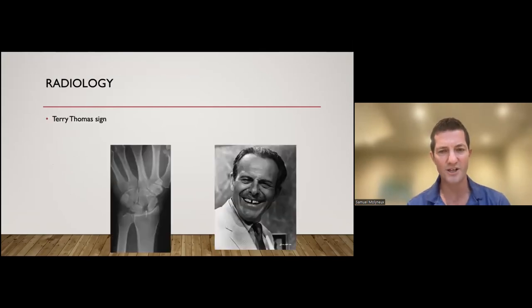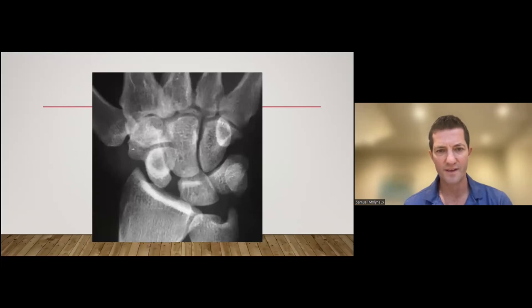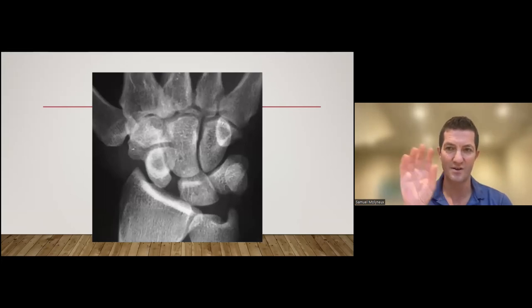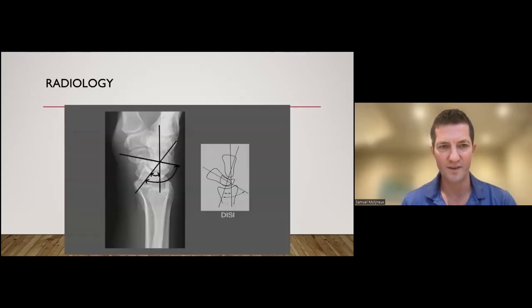When you look at the radiology, you get widening between the scaphoid and the lunate, it's called the Terry Thomas sign, named after the actor Terry Thomas. You see the scaphoid signet ring sign. The scaphoid looks like a circle end on because it's flexed so much into a flexed position. Once again, when we look from the lateral side, we have that DISI deformity because the scaphoid is wanting to flex, and the lunate and the triquetrum are extending.